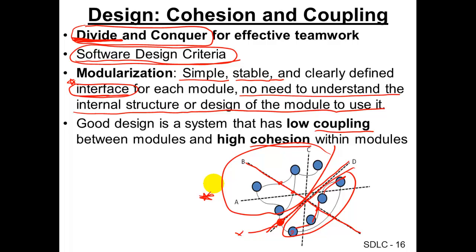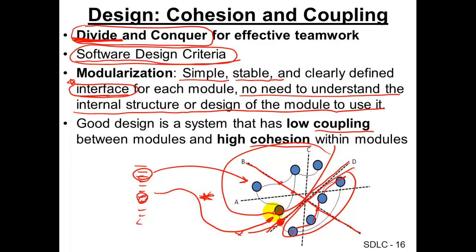If you cut at D, the teams working on each subsystem only need to deal with one interface. They agree on interface X — what is sent in and what is returned. What happens internally is irrelevant to the other team. You have a very clear, well-defined interface — only one interface instead of four. Where you cut is very important. A lot of times you have a laundry list of things to do, and you need to group certain things together into modules, then define their interfaces, and decide how to divide and conquer.